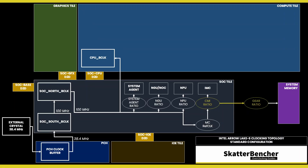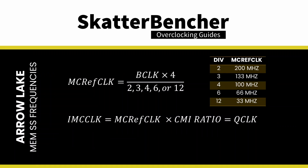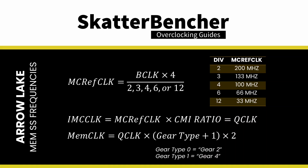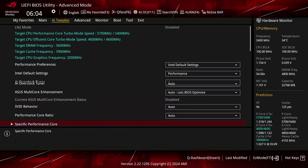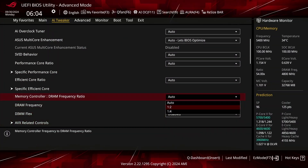The memory controller reference clock is then multiplied by a CMI ratio to achieve the final memory controller frequency, or cue clock. The system memory operating frequency, defined as the memory data rate, is then obtained by multiplying the cue clock by 2 times the gear type plus 1. There are two gear types available for Arrow Lake: gear type 0 is better known as gear 2, and gear type 1 is known as gear 4. In the ASUS ROG BIOS, you can configure the gear type via the AI Tweaker menu by adjusting the memory controller DRAM frequency ratio.